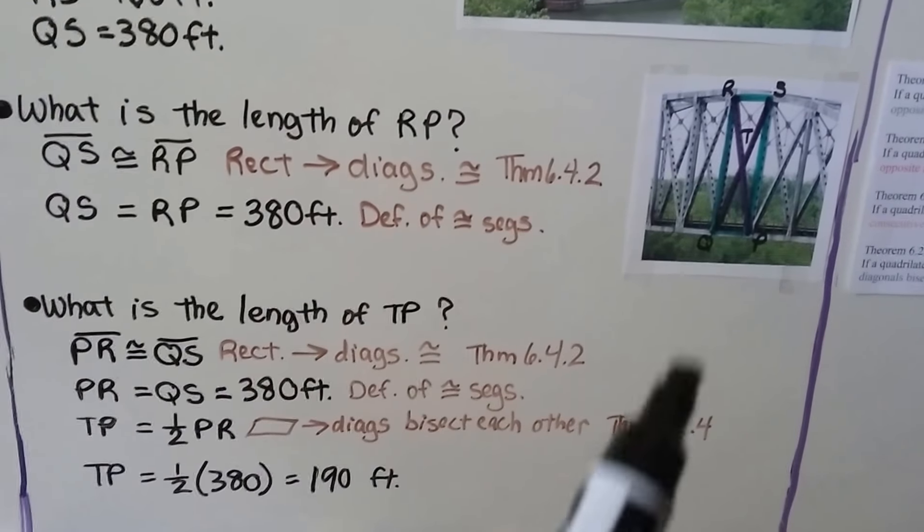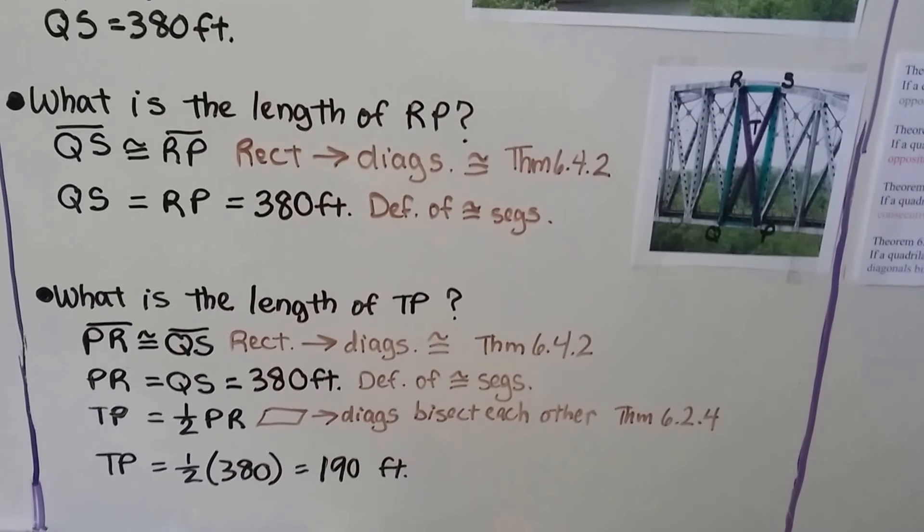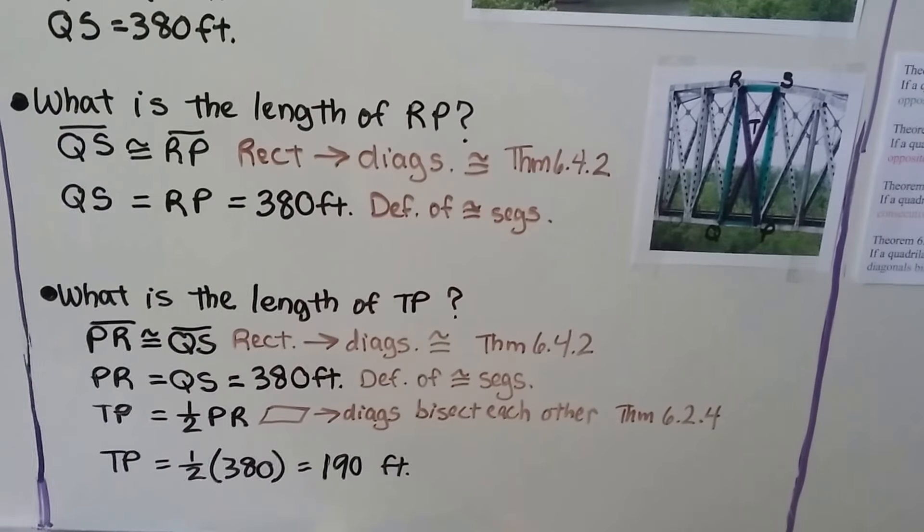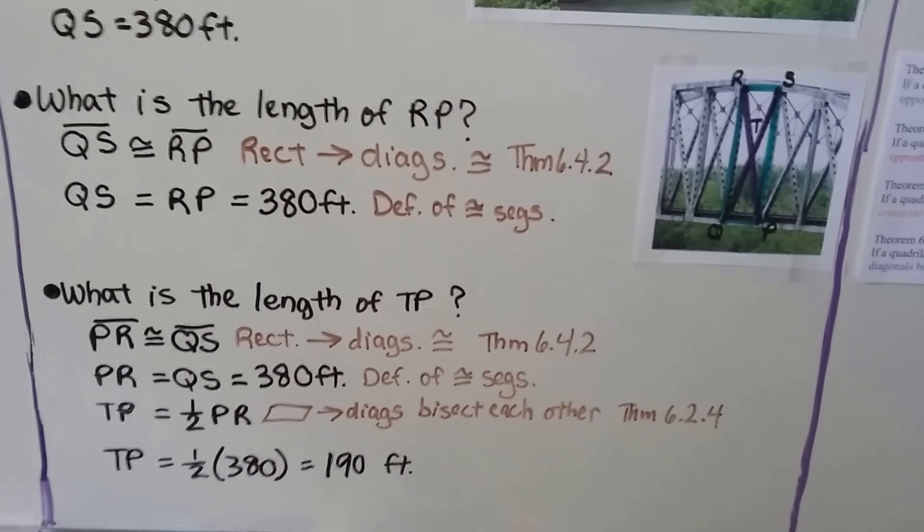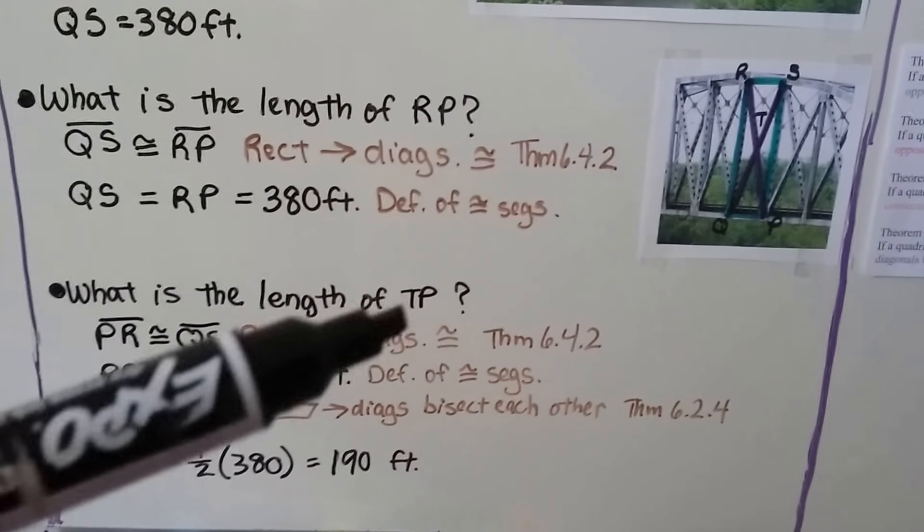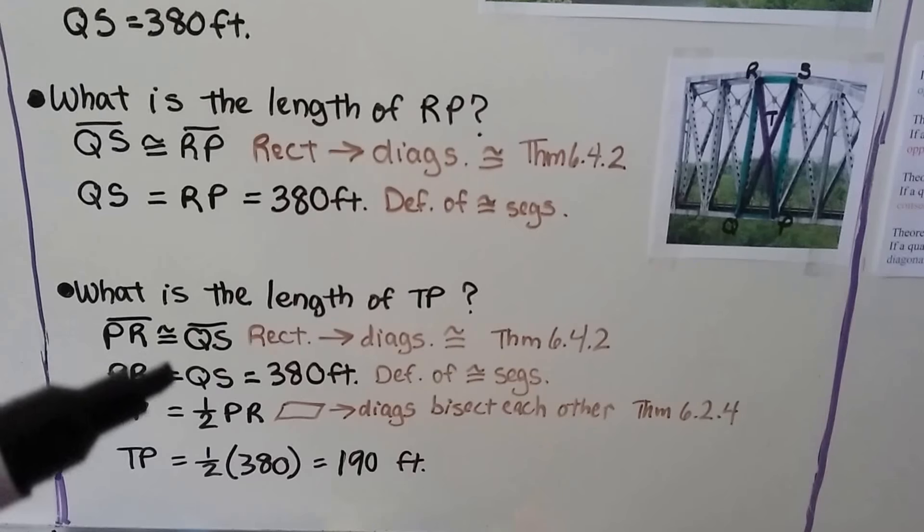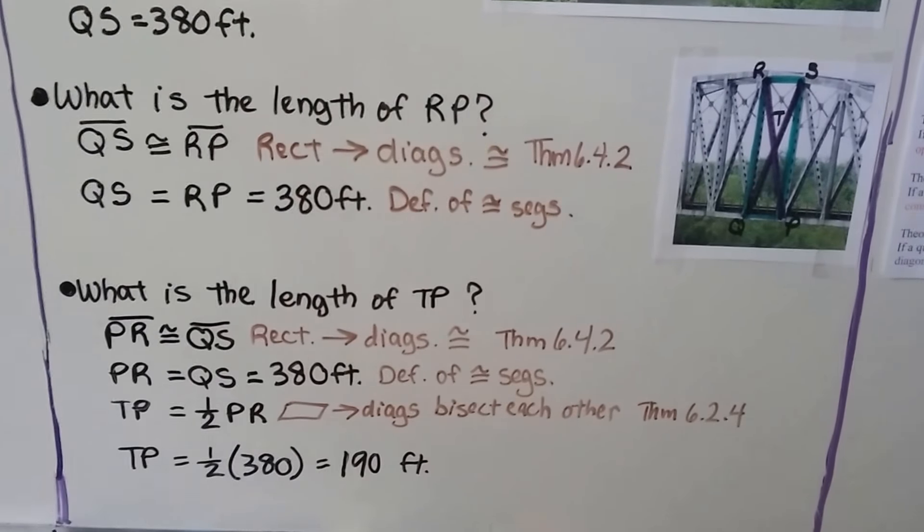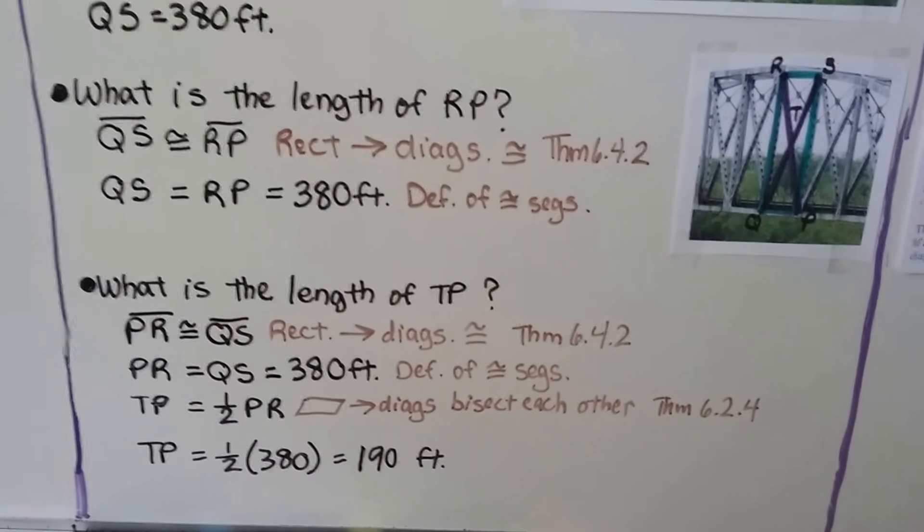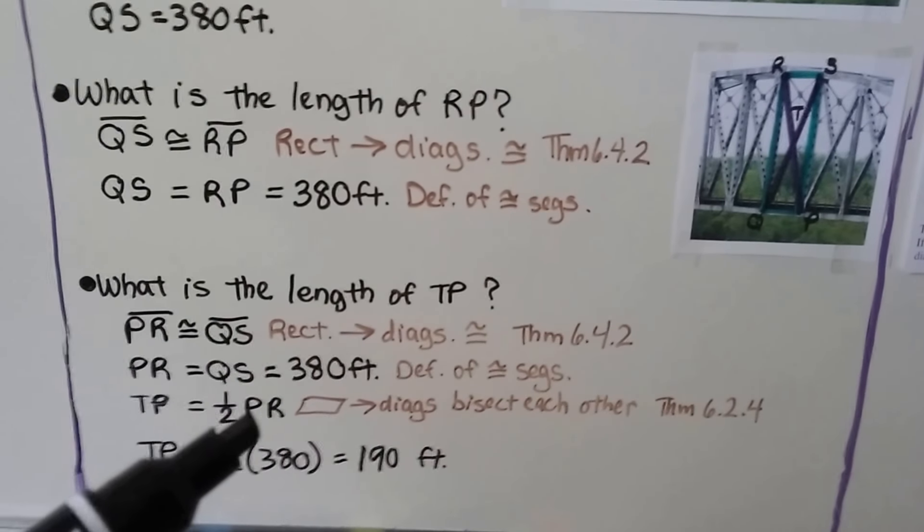And what's the length of TP? That would be from the center down here. PR, this diagonal, is congruent to QS, this diagonal. And we know from our second theorem that if it's a rectangle, then the diagonals are congruent. And that means PR is equal to QS, which means it's equal to 380 feet, because that's the definition of congruent segments. So TP would be half of PR.